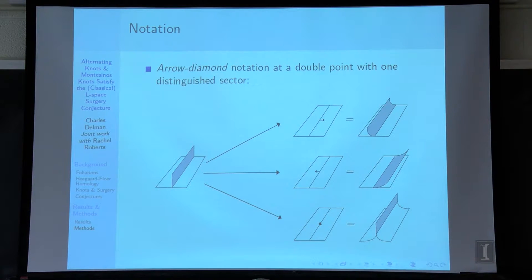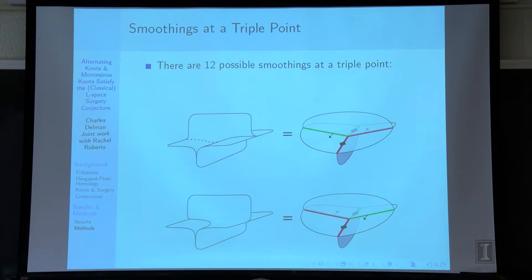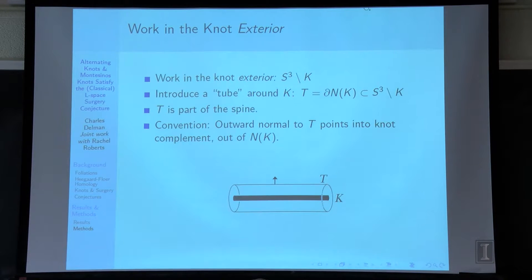At a triple point there are 12 possible smoothings because you have tetrahedral symmetry — six possible sectors meeting at that triple point. Pick any one to be your distinguished sector of a double point. To get the triple point, you're putting another branch in, and you've got two ways to smooth it because it has to switch smoothing direction as you go across that little ditch. That gives you a lot of flexibility.